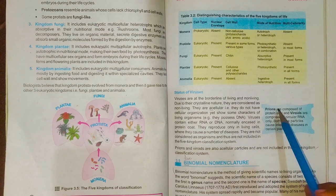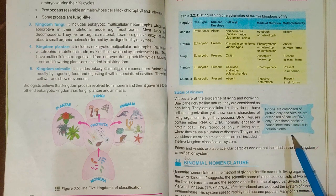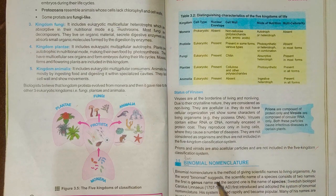Differentiate between prions and viroids — this is an important board short question answer. Also, write a note on binomial nomenclature, which is a long question.